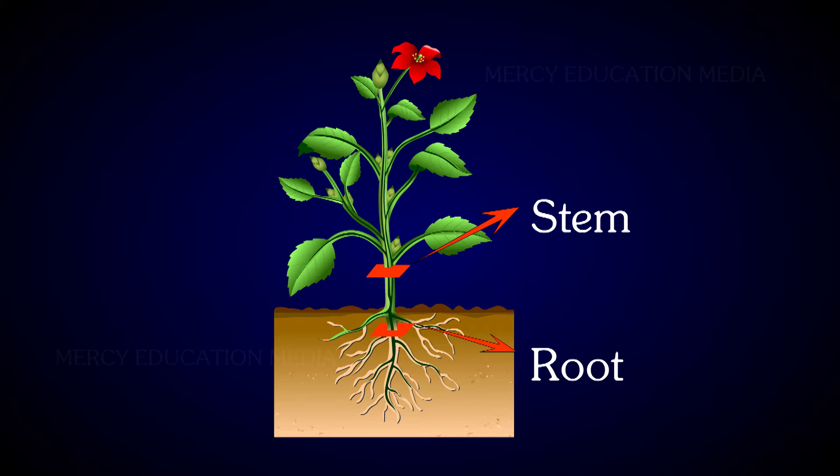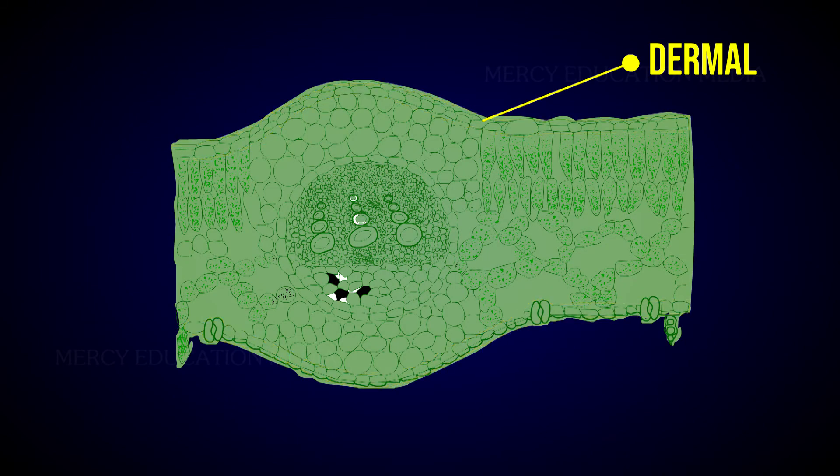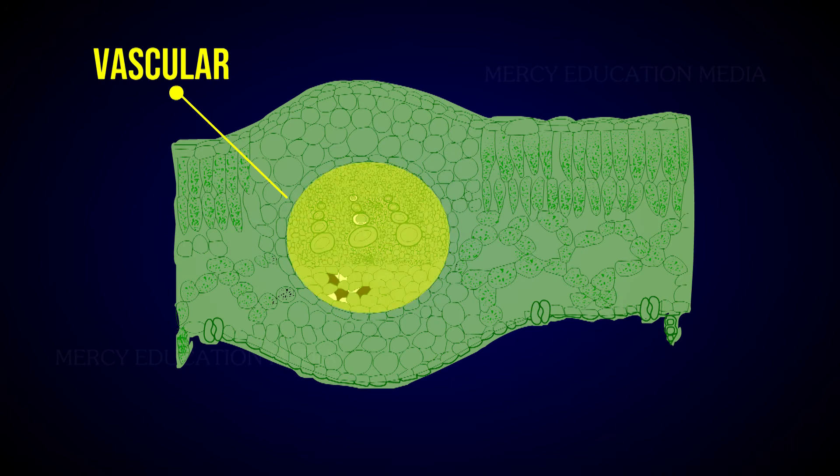Like stems and roots, leaves also have three tissue systems: dermal, ground, and vascular.